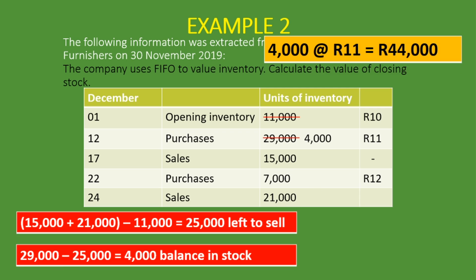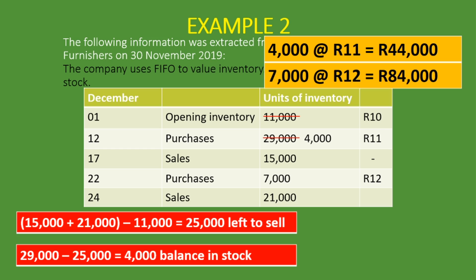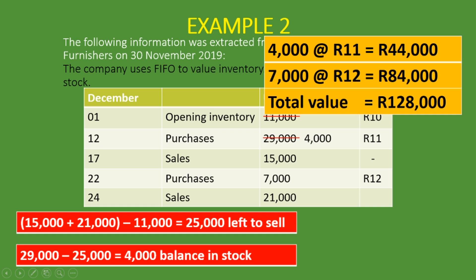So let's calculate the closing stock value. 4,000 units at 11 Rand gives us a value of 44,000 Rand. Then 7,000 units at 12 Rand gives us a value of 84,000 Rand. Adding the two together gives us a total value of closing stock of 128,000 Rand. I hope you attempted the question yourself and got the same answer.